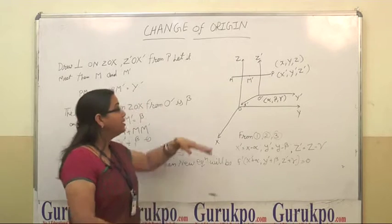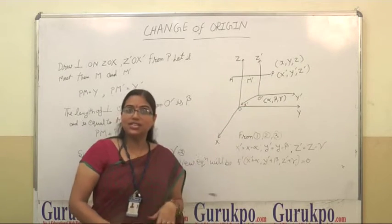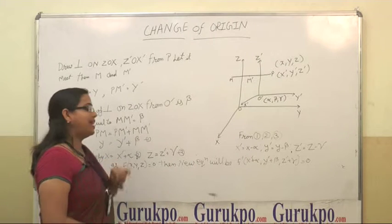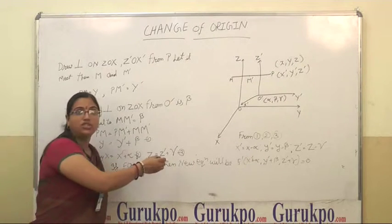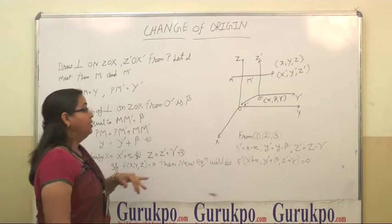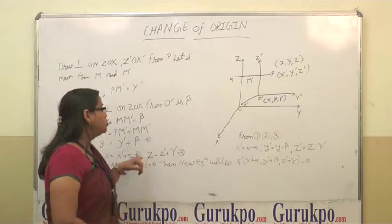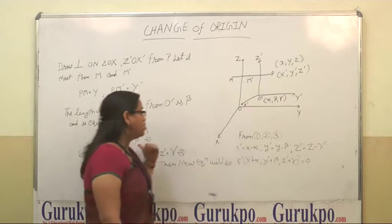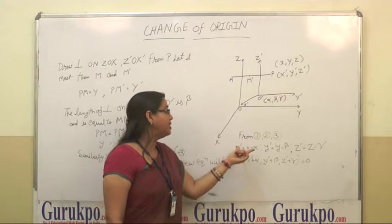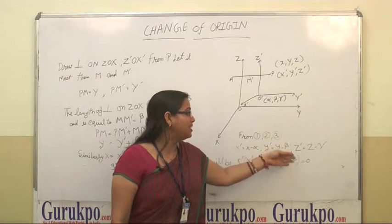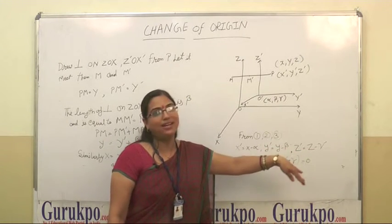Similarly, we can find the relation between X and X dash and Z and Z dash. That will be X is equal to X dash plus alpha and Z is equal to Z dash plus gamma. If we name these equation number 1, 2 and 3, then from equation 1, 2 and 3, we can find X dash is equal to X minus alpha, Y dash is equal to Y minus beta and Z dash is equal to Z minus gamma.